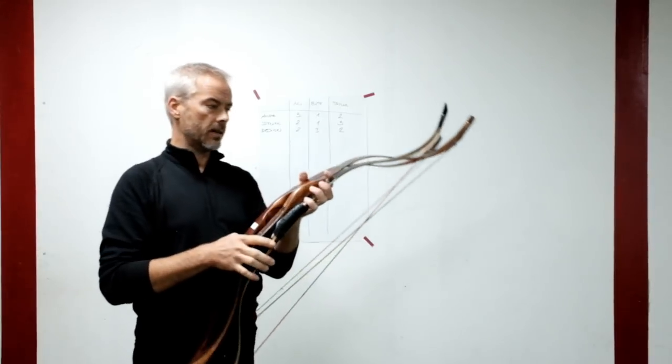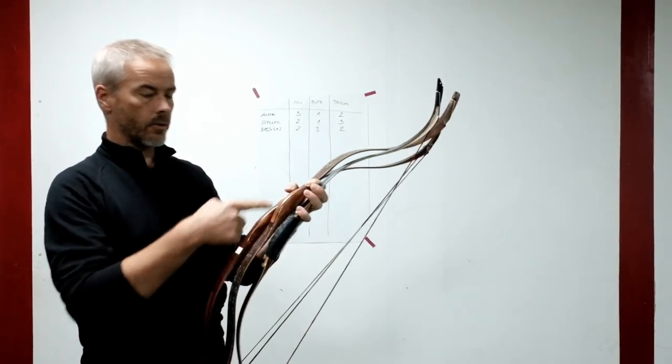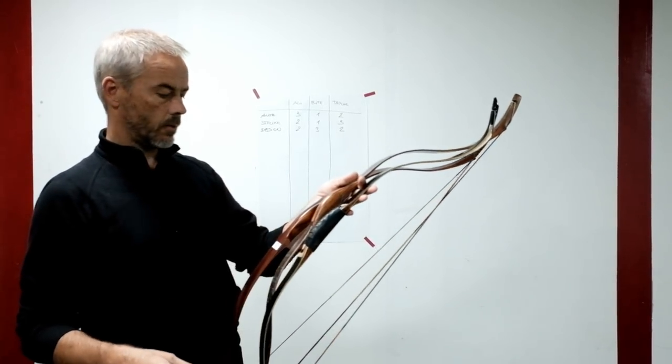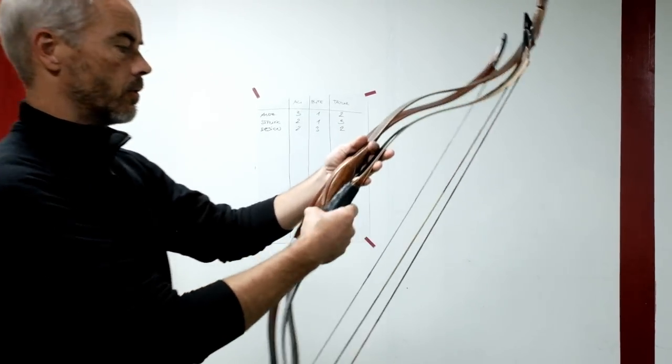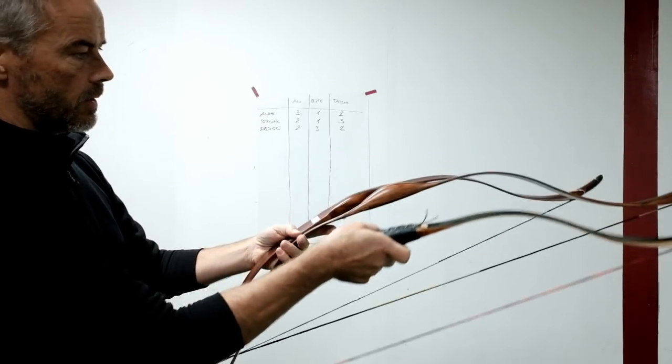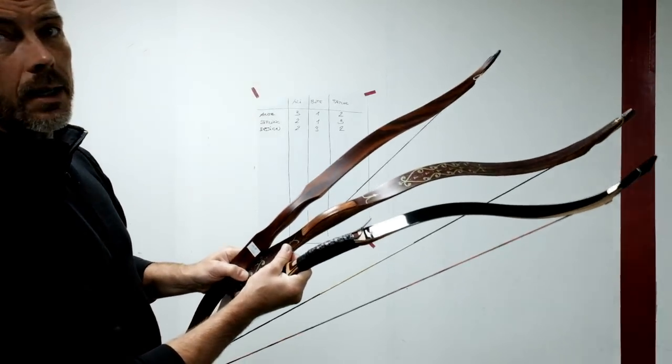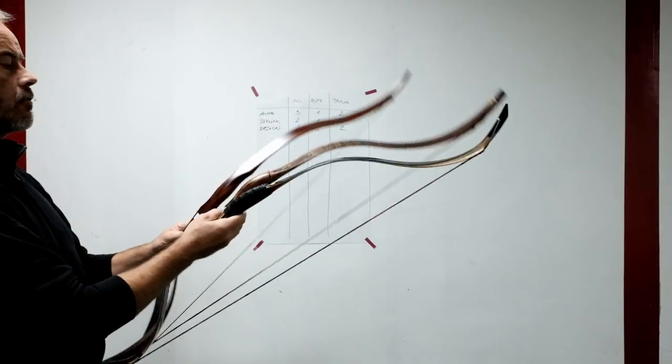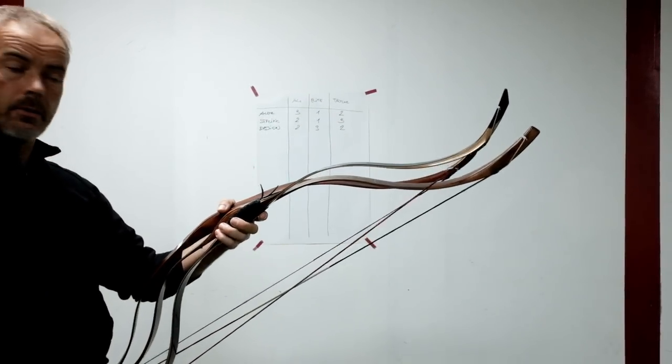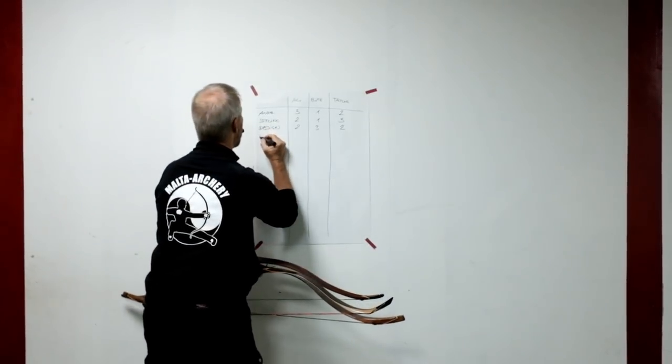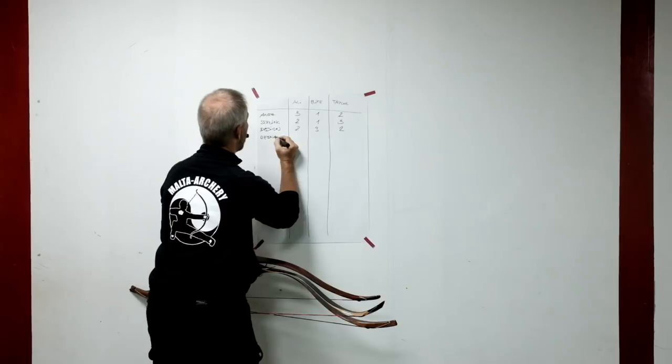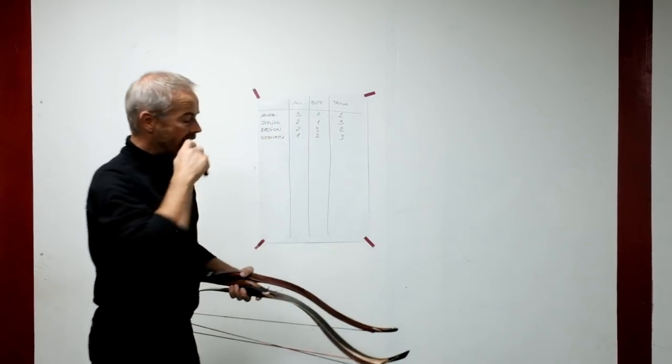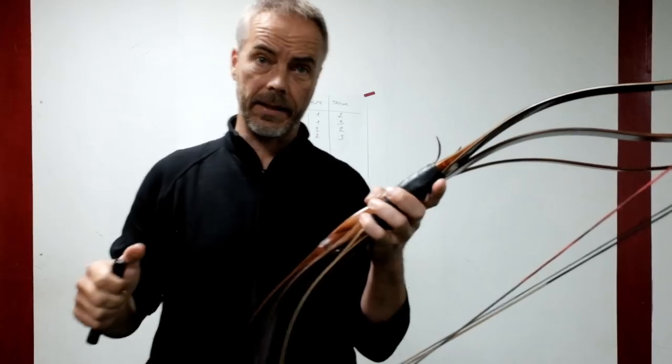When you see it from a re-enactor's perspective, of course you can get Ali Bow in natural wood colors too. But when it's really up to re-enactment and you want to show the era of the Ottomans, I would definitely always go with the Taylor Bow. This looks the most re-enact-ish. For re-enactment: Taylor three, Elite two, Ali Bow one.